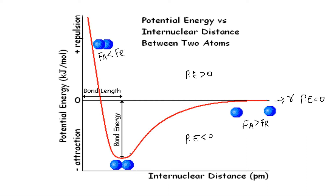Out of these two extremes, there is the optimum situation. At this point, the force of attraction and the force of repulsion balance out. Following the trend along the curve: as we move toward this point, force of attraction is greater than force of repulsion, and as we move further left, force of repulsion increases due to the closeness of the two atoms, and then both balance out at this point. Beyond this point to the left, force of repulsion dominates over force of attraction.